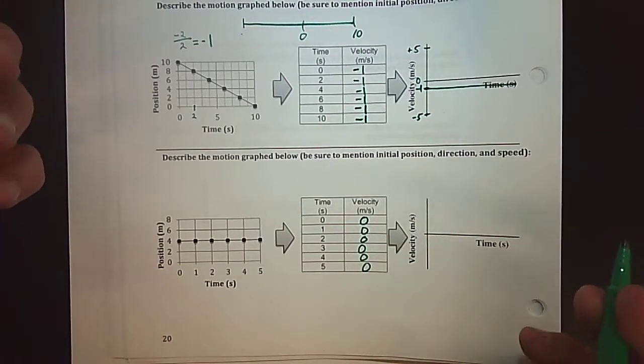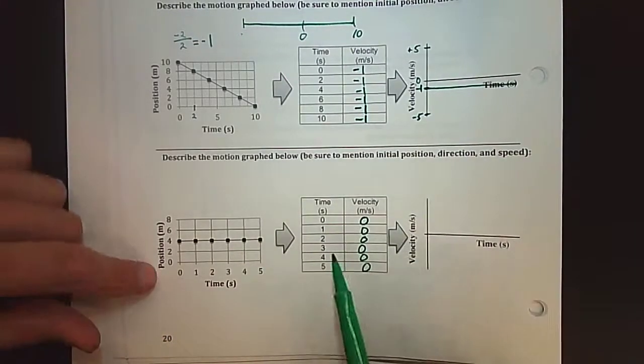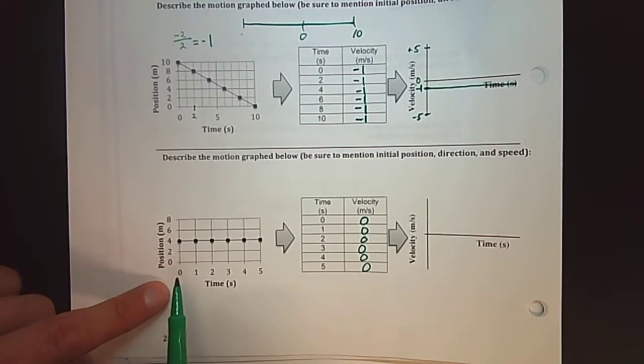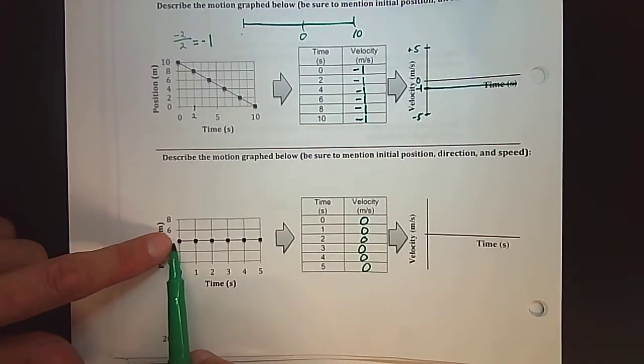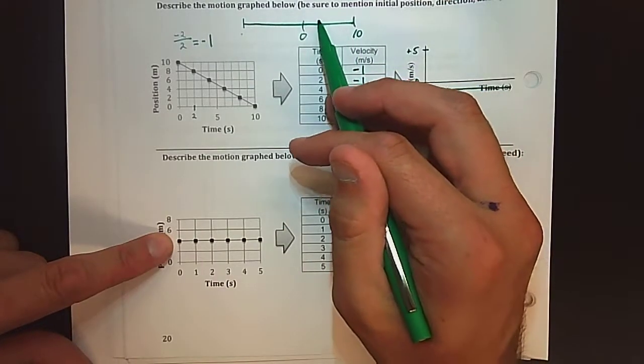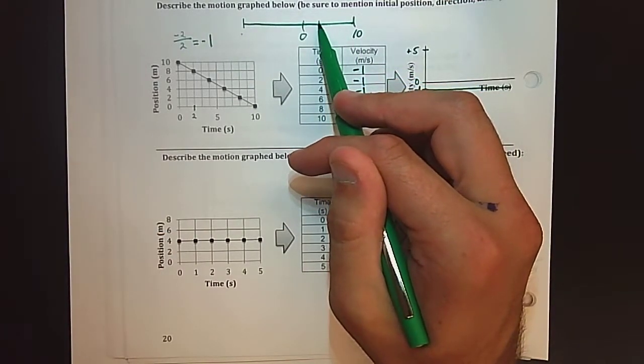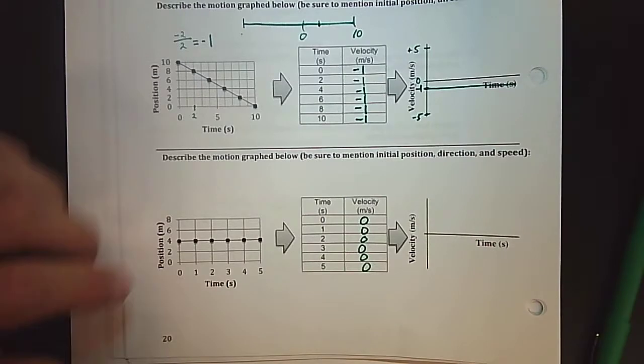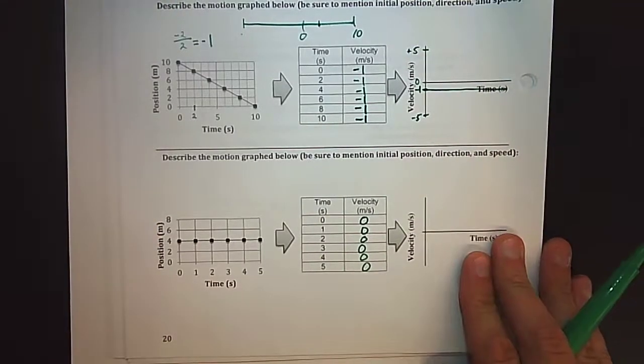And that makes sense because if I tell the story of my graph, as time increases my position, my object was at four, maybe it's up here at four, and as time increases it stays there. So if we transfer this over to a velocity versus time graph.